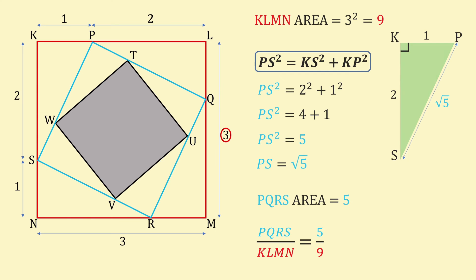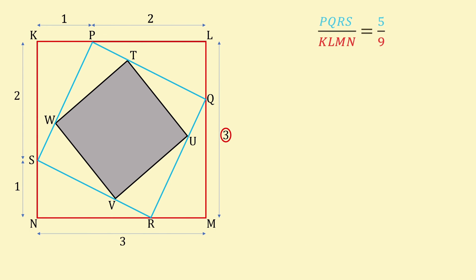Likewise, as the smallest square has the same proportions as PQRS, they have the same ratio of lengths. So the area of TUVW as a fraction of PQRS's area is 5 over 9 too.